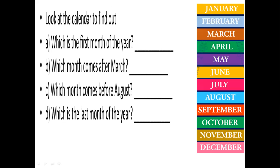Now, look at the calendar to find out which is the first month of the year. Children, this is the calendar. There are 12 months. 1, 2, 3, 4, 5, 6, 7, 8, 9, 10, 11, 12. Now, 12 months are there in a year. Which is the first month of the year? Yes, it's January.